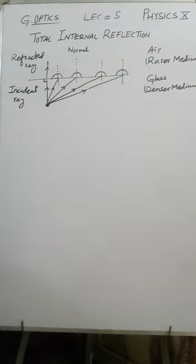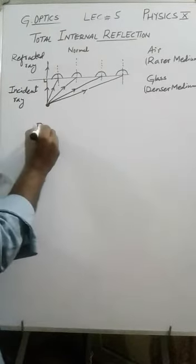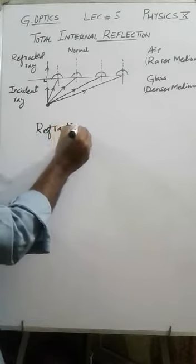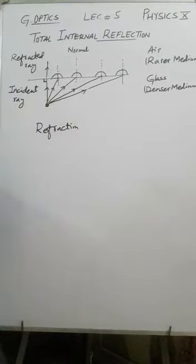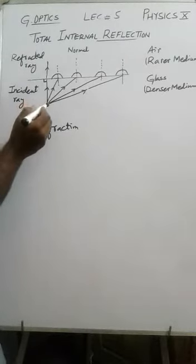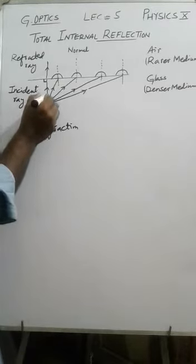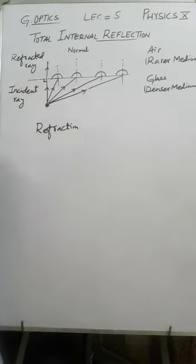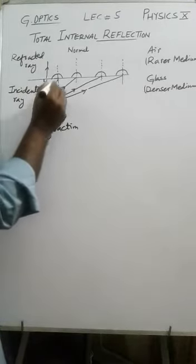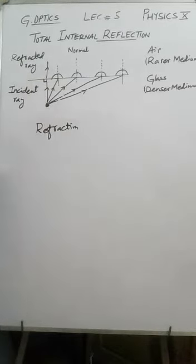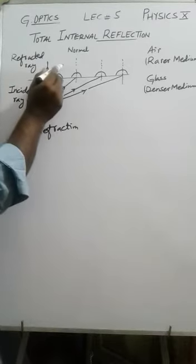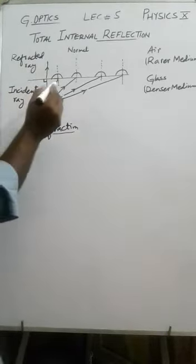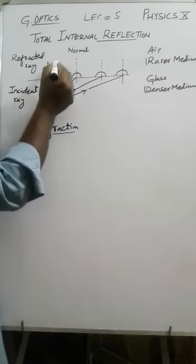Now we discuss refraction. From an object, infinite rays of light emerge. Ray one goes perpendicular — when a ray goes perpendicular from glass into air, it does not bend; it goes straight. A slant ray coming to the boundary of glass and air is entering into air, which is refraction of light, so it will not go straight — it will bend.